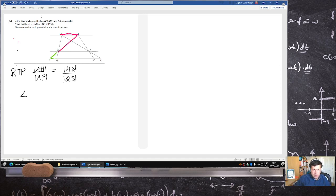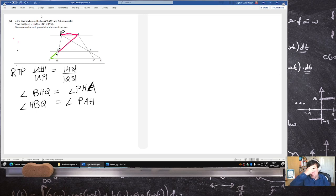So angle GHQ is equal to angle, that's a P there isn't it, PHA. Those angles are the same. Also angle HBQ is equal to angle PAH, I don't know, alternate angles.